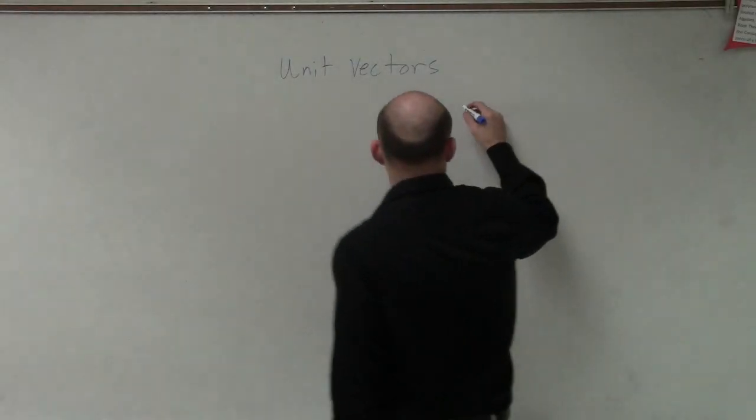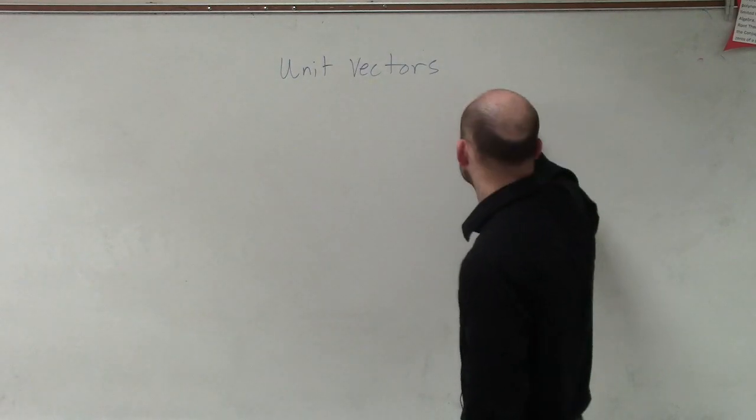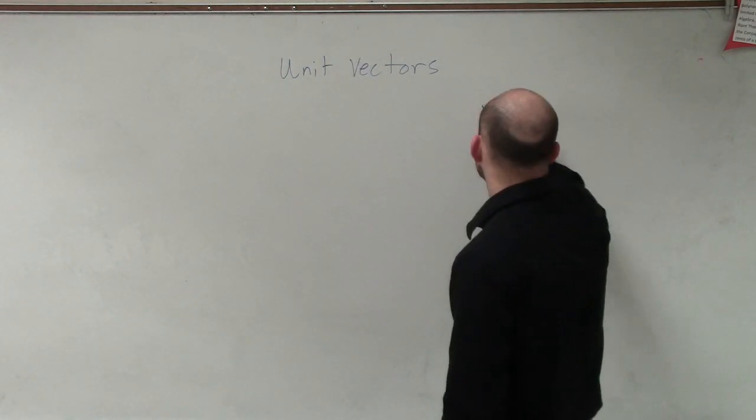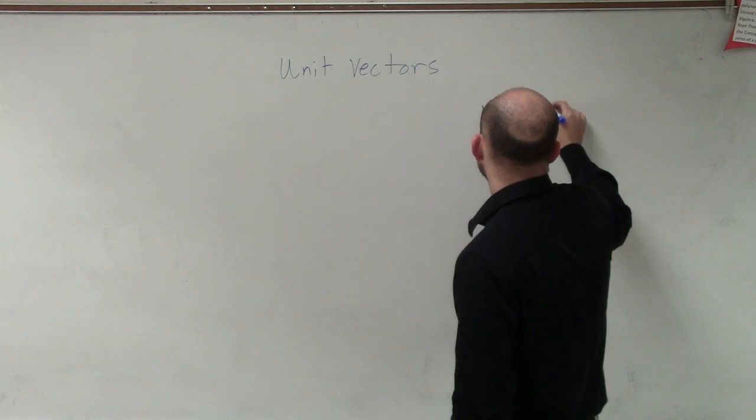So we have a vector v. Let's say our vector v is in component form, which would be vector v, v1 comma v2.